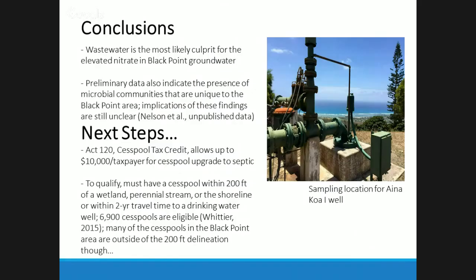The overlap between elevated nitrate stable isotope values at Black Point, high nitrate concentrations, and the recharge model confirmed that wastewater is the most likely culprit for the elevated nitrate in Black Point groundwater. I'm also working with Craig Nelson at UH, who studies microbial communities and is finding that Black Point groundwater is associated with a unique biome of microbes not found in Wailupe groundwater — we think it's associated with the wastewater.